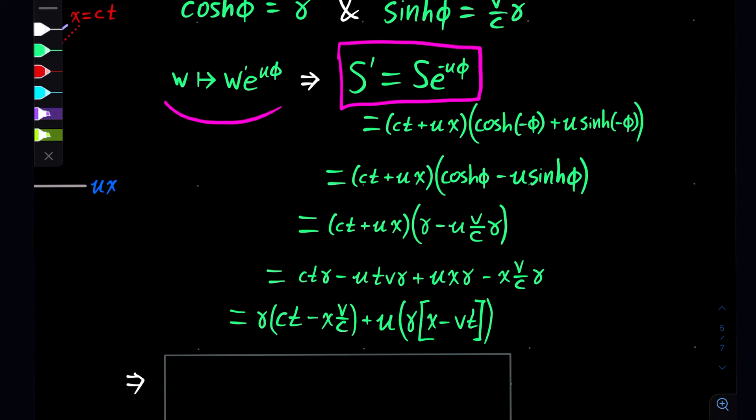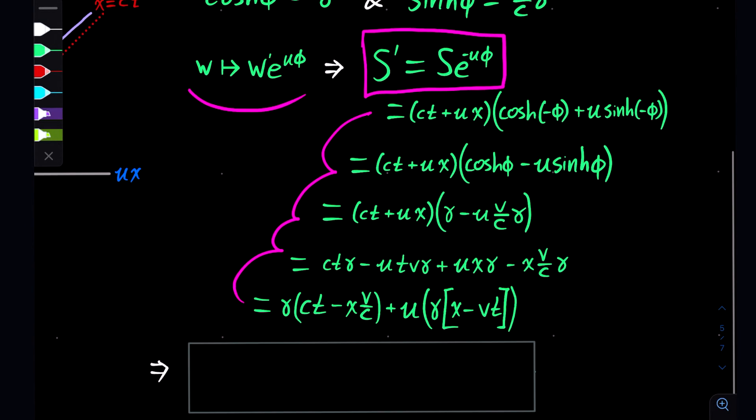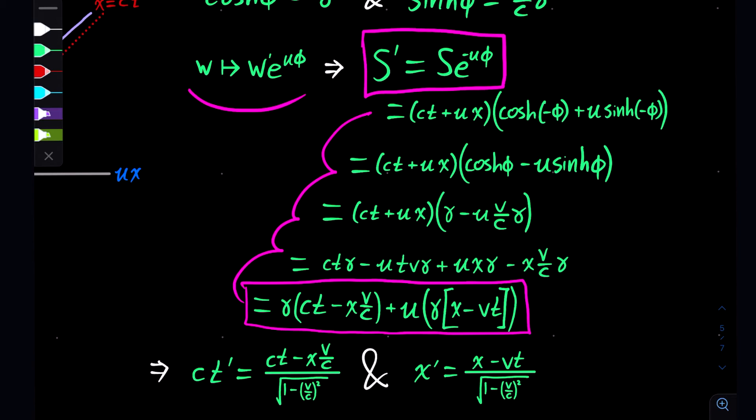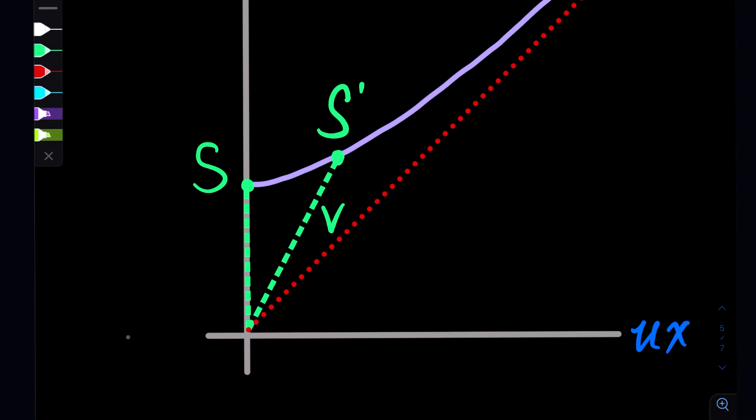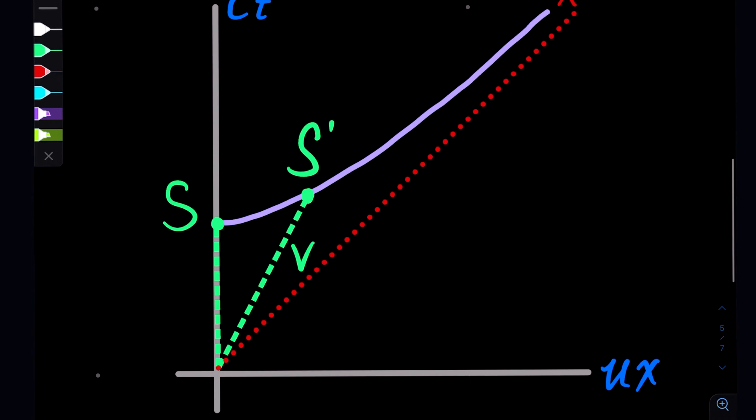Now if we plug in everything, then the math continues to work out until we get this section right here. And what's really cool about this is that it gives the new coordinates in terms of the old coordinates, and this is exactly what Lorentz transformations are. So Lorentz transformations are derived as a hyperbolic rotation, and this is visualized on this spacetime diagram where S is rotated through the hyperbolic angle φ to get to S'.